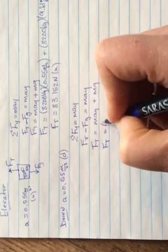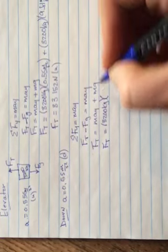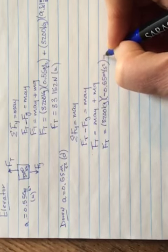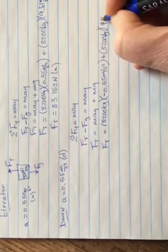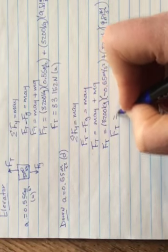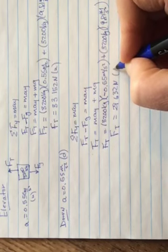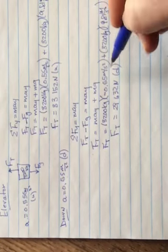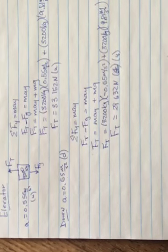MAy, M is still 3,200 kilograms. But the acceleration is downward, and so it'll be negative 0.55 meters per second squared, plus 3,200 kilograms. And again, no negative on the 9.81 meters per second squared, because we already put it in right up there. And this time, the Ft is 29,632 newtons. And it would be... Not down. It would be up. I don't know why I put it down there. It would be up. It worked out to be positive. It would be up.